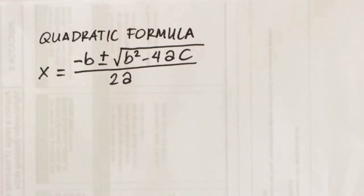The quadratic formula is given by x equals negative b plus and minus the square root of b squared minus 4ac, all over 2a.